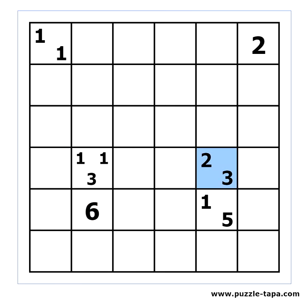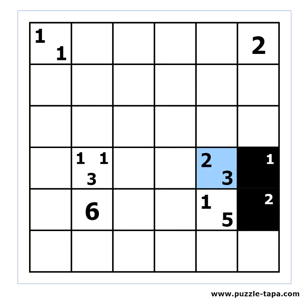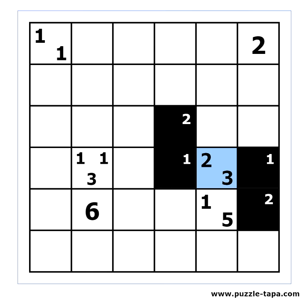If you have two numbers in a clue, that means there are two blocks around the cell. In this case you need to have a block of two black cells and a block of three black cells somewhere around that clue. The order of the clue numbers does not represent the order of the black blocks. You should always have at least one white cell between each two blocks.